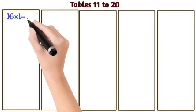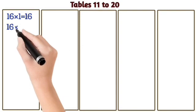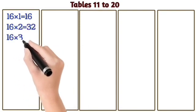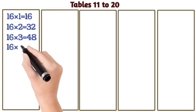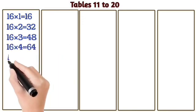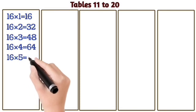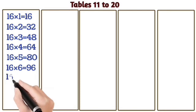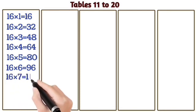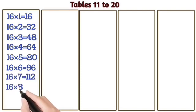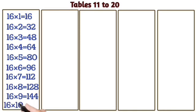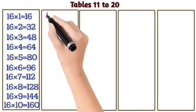16 ones are 16. 16 twos are 32. 16 threes are 48. 16 fours are 64. 16 fives are 80. 16 sixes are 96. 16 sevens are 112. 16 eights are 128. 16 nines are 144. 16 tens are 160.